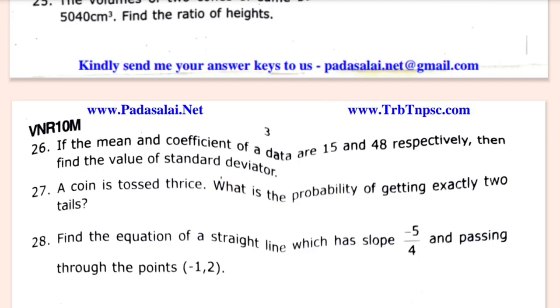Find the equation of a straight line which has slope minus 5 by 4 and passing through the point (minus 1, 2).